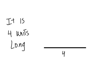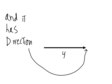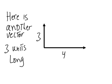Here is a vector. It is four units along and it has direction. Here is another vector. It's three units long.